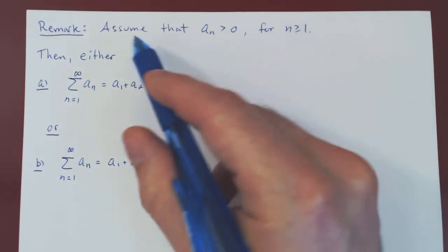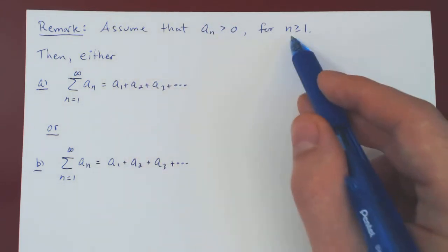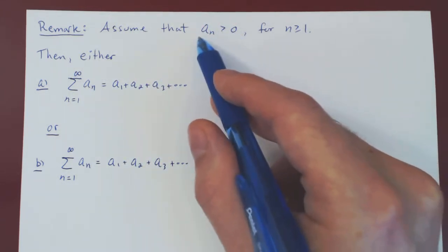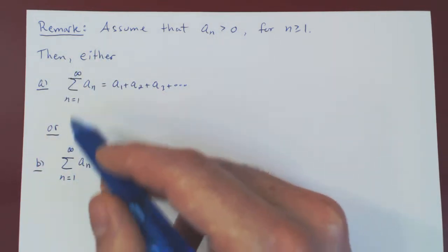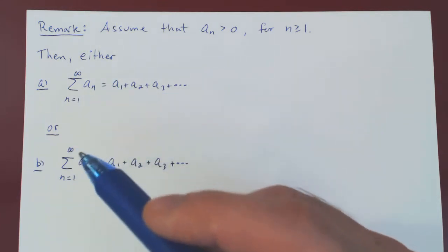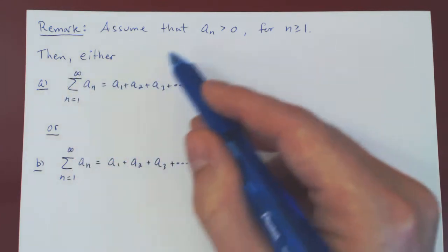So here's the assumption. We assume we have a positive sequence, so a1 is positive, a2 is positive, a3 is positive, and so forth. Then we claim that there are only two conclusions. And let's see what those two conclusions can be about the corresponding series.